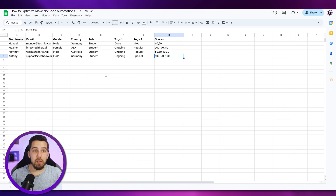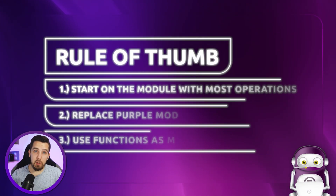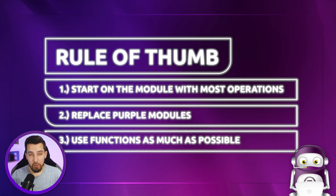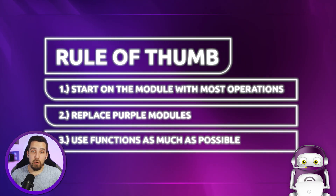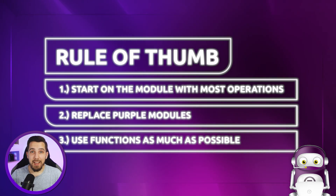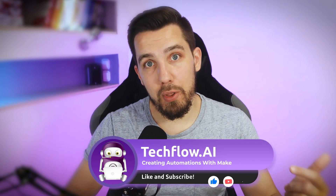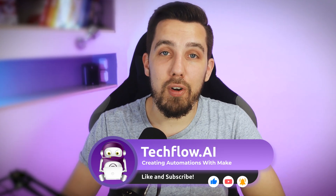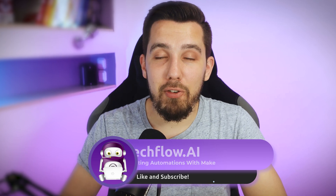I hope this helped and you got some ideas on how to optimize your scenarios. The rule of thumb: first start where you're spending the most operations on that module, then look out for your purple modules and try to replace them using functions as much as possible. Let me know if you have any other topics, ideas, or pain points with Make in the comments below — and I will record new videos based on that. Thank you very much for watching.